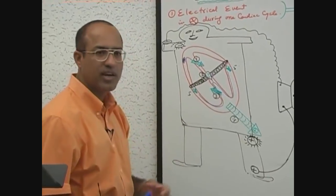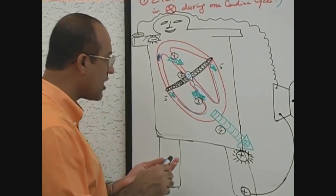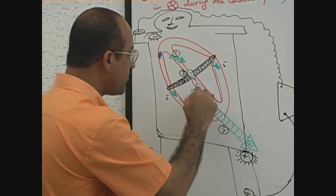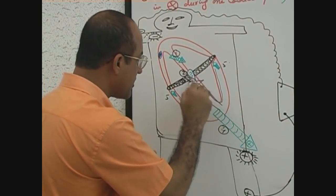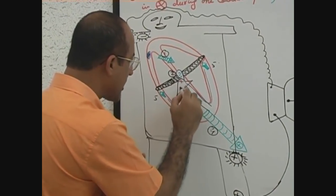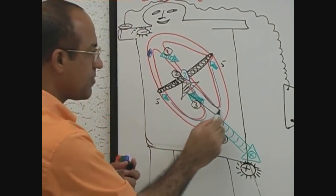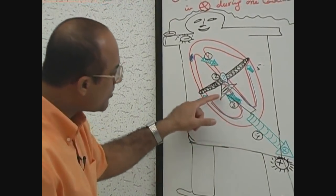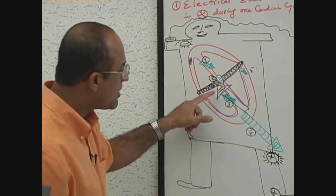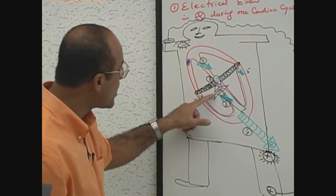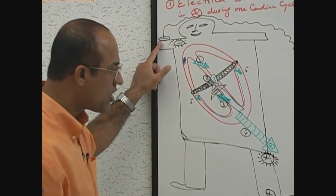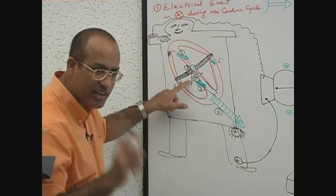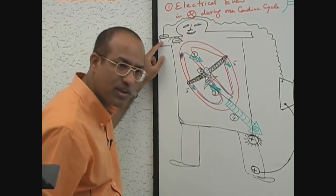Going back to the diagram: the repolarization vector is drawn in black — its head is electronegative. Now the ventricles are repolarizing. The vector is moving towards the negative electrode. There is a negative vector of repolarization moving towards the negative electrode.